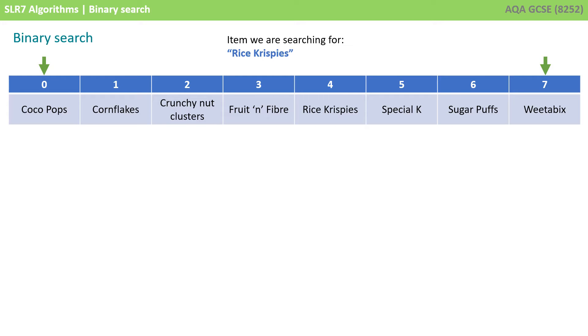However, the binary search requires the data to be in order for it to work, but it's much more efficient than a linear search on average. So let's look at a typical example.